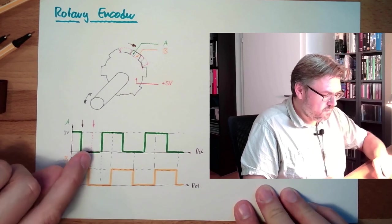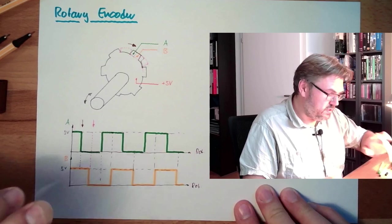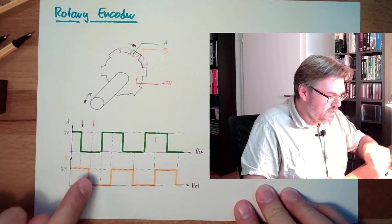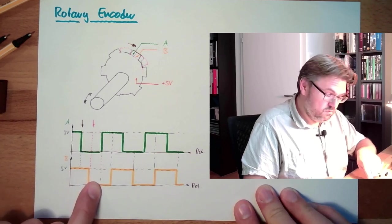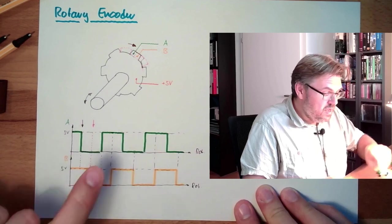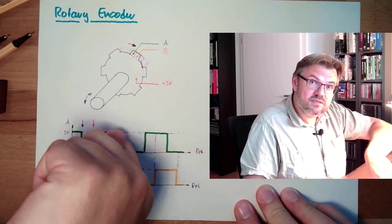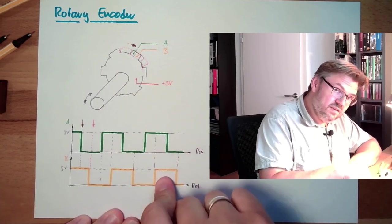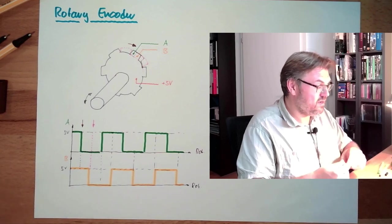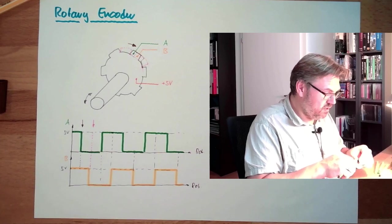If we just look at the change of A from 0 to 1. We are changing from 0 to 1. If this 0 to 1 is happening. And B is 0. Then we must have moved in this direction. If this 0 to 1 is happening. And B is 1. Then we must have moved in this direction. With these two signals and this logic. I can determine whether I turn it clockwise or counterclockwise.